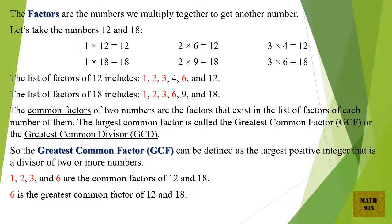Let's take the numbers 12 and 18. 1 times 12 equals 12. 2 times 6 equals 12. And 3 times 4 equals 12. So the list of factors of 12 includes: 1, 2, 3, 4, 6, and 12.